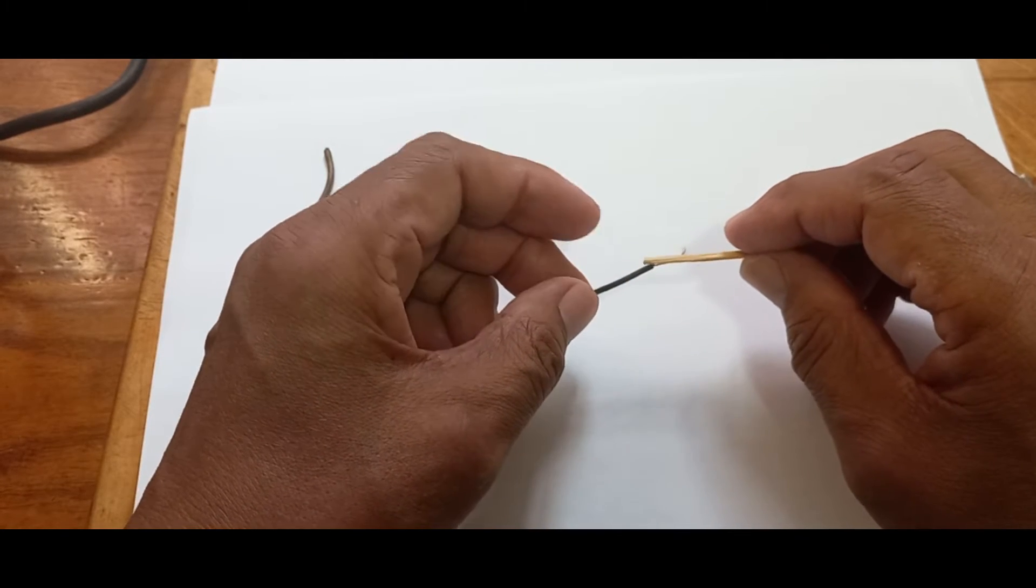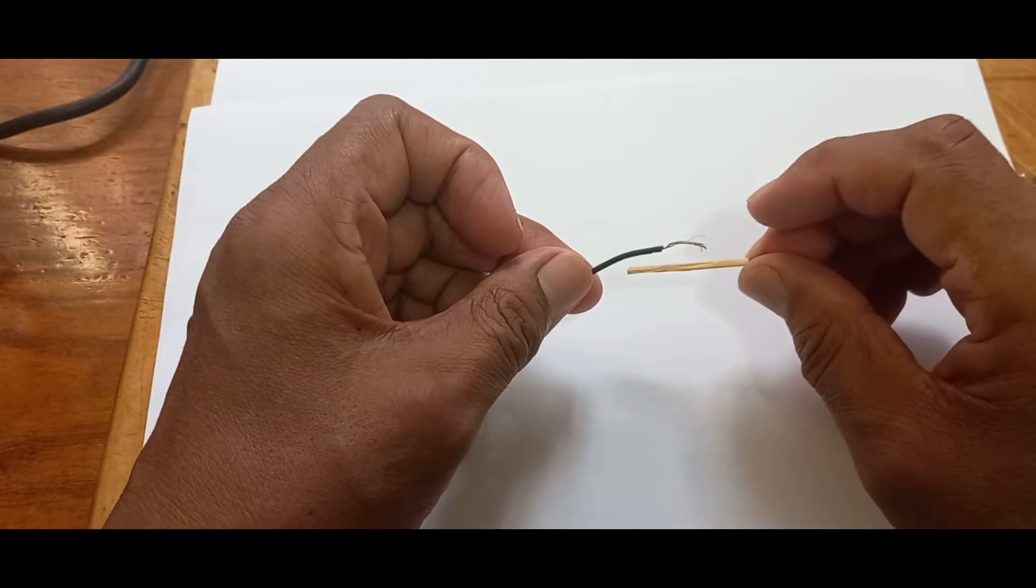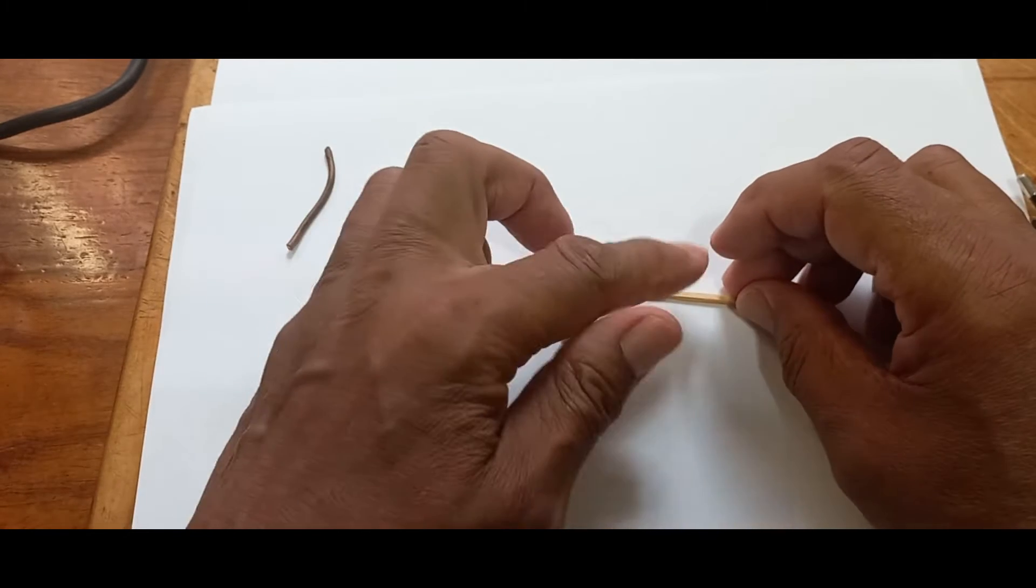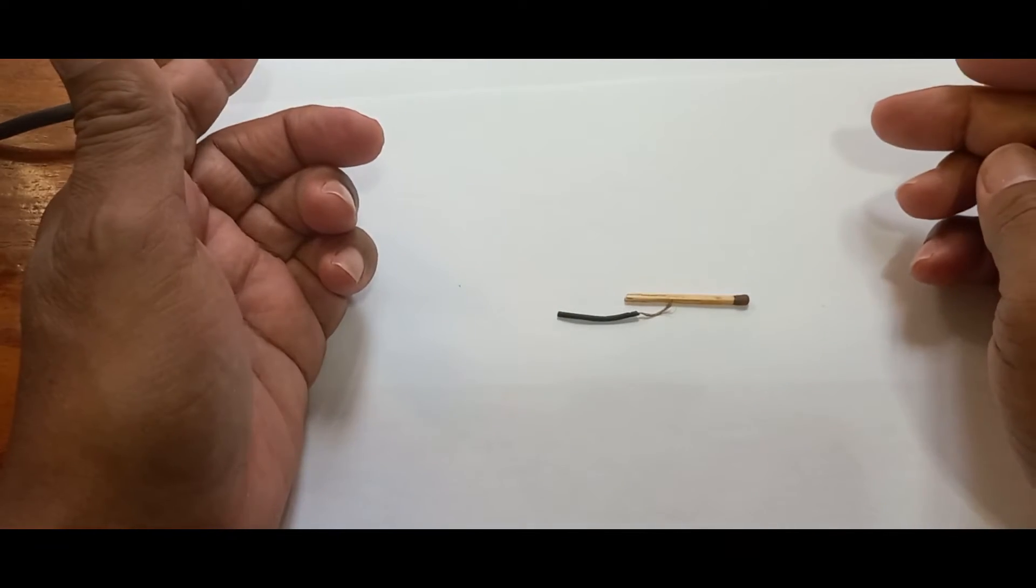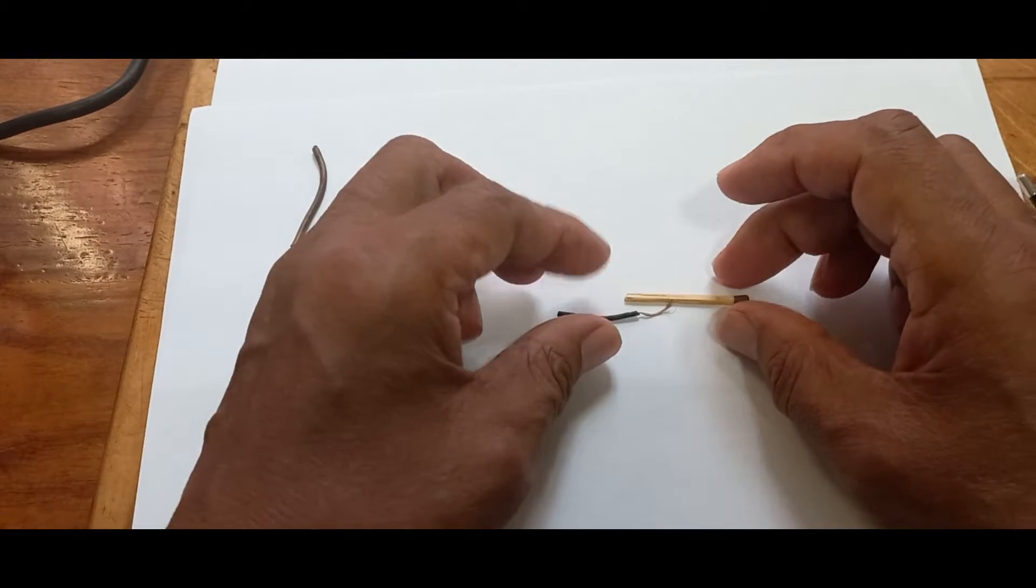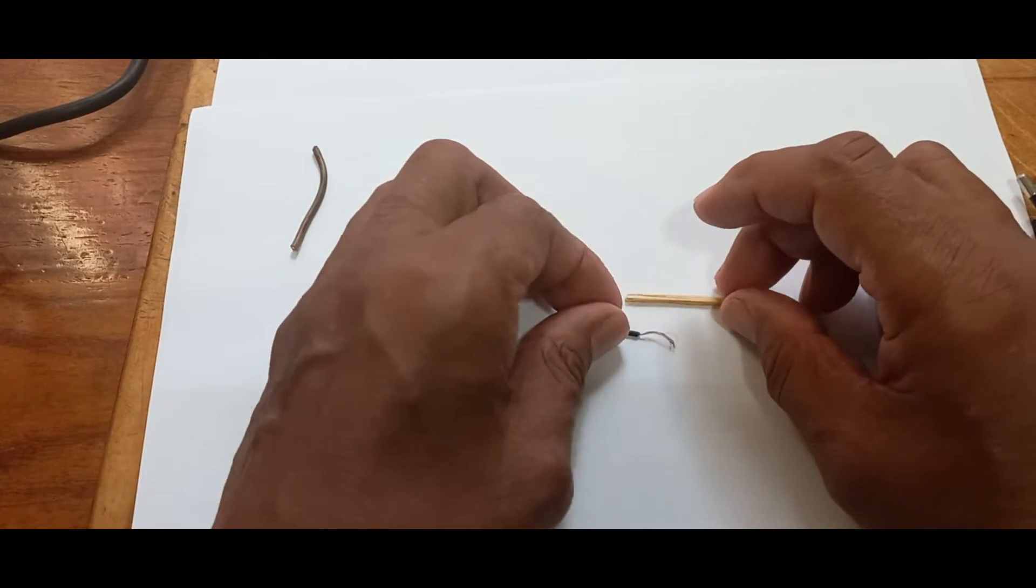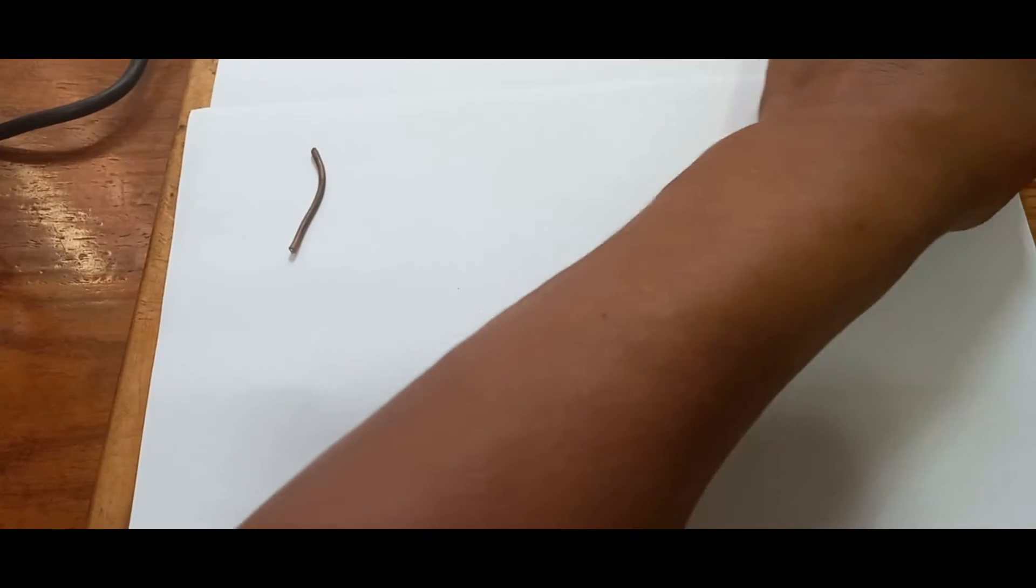In this case I want to show you how thin the wire is and here is an ordinary match that you can see how ultra-thin this wire is. The problem originated from the following.